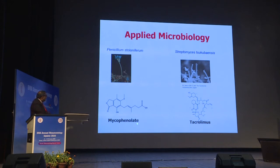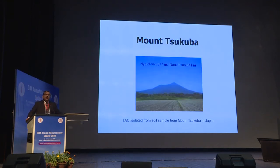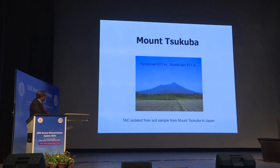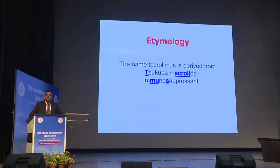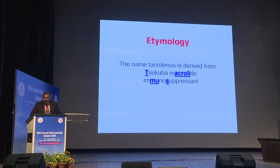From Penicillium stoloniferum was derived mycophenolate, and from Streptomyces tsukubaensis was derived tacrolimus. You need to know where the name originates. Mount Tsukuba is a twin-peaked mountain in Japan and a favorite tourist destination. The two peaks differ by only about six meters — Nantaisan and Nyotaisan. From a soil sample from this mountain was isolated tacrolimus, and etymologically the word is derived from 'Tsukuba macrolide immunosuppressant,' making it quite a mouthful.